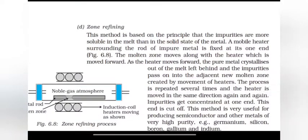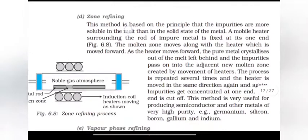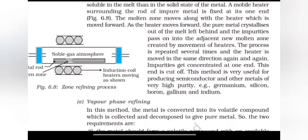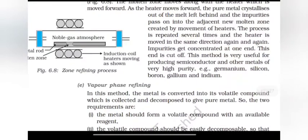Zone refining. This method is based on the principle that the impurities are more soluble in the melt than in the solid state of the metal. A mobile heater surrounding the rod of impure metal is fixed at its one end. The molten zone moves along with the heater which is moved forward. As the heater moves forward, the pure metal crystallizes out of metal left behind and the impurities pass on to the adjacent new molten zone created by movement of heaters. The process is repeated several times and the heater is moved in the same direction again and again. Impurities get concentrated at one end. This end is cut off.